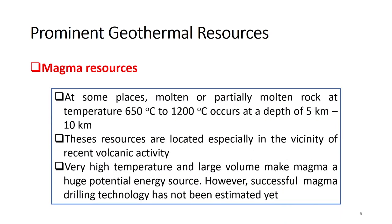Now, magma resources: at some places, molten or partially molten rock at temperatures of about 650 to 1,200°C occurs at depths of 5 to 10 kilometers. These resources are located especially near recent volcanic activity. The very high temperature and large volume make magma a huge potential energy source; however, successful magma drilling technology has not been developed yet.